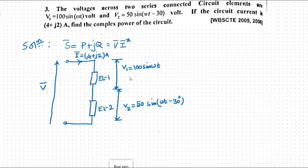Now, this V1 equal to 100 sin omega t can be represented in phasor form V1 bar equal to 100 by root 2 at the angle of 0 degree. Similarly, V2 bar equal to 50 by root 2, because all the phasor quantities always have their values in RMS, at the angle of minus 30 degrees.